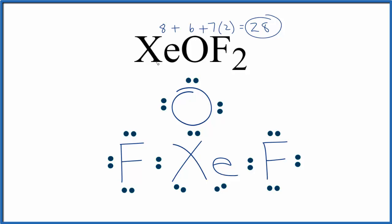So this is a reasonable Lewis structure for XeOF2. We've used all 28 valence electrons. Oxygen, the fluorines, they have 8 valence electrons. And the xenon, it has 2, 4, 6, 8, 10. And that's okay, it can have more than 8.